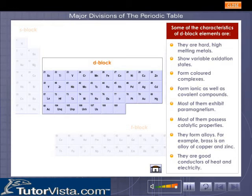D-Block Elements: The elements in which the last electron enters the D subshell of the penultimate energy level are called D-Block Elements. They include the transition metals.